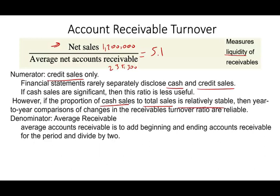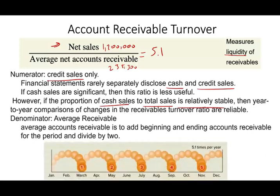What does 5.1 mean? We turn over our receivable approximately five times a year — in January, March, May, July, September, and a little over by December. It means we sell on account and collect the receivable almost five times a year. Whatever sales we make in January, we collect in March; March collections come in May, and so on. The higher this ratio, the better — it means we are selling more and collecting the money.